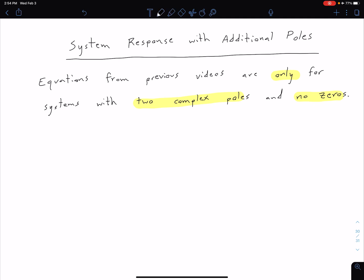So what we're going to address in this video is what happens if we have more than those two complex poles, and in a later video we're going to come back and talk about what happens if we add zeros to the system as well.